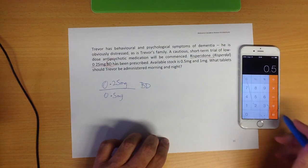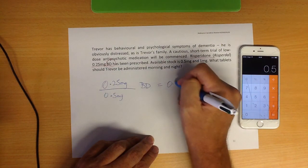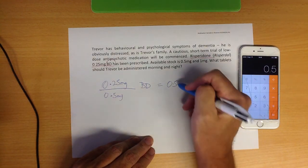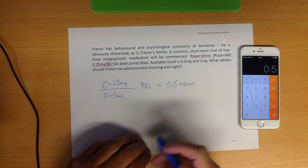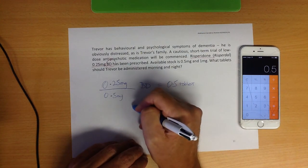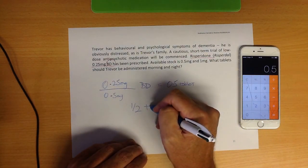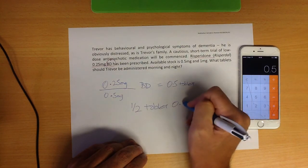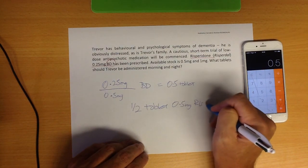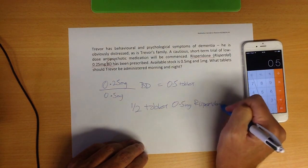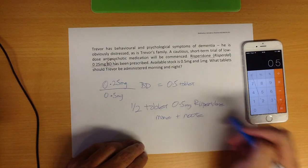And that equals 0.5. So that equals 0.5 of a tablet. So it's half a tablet, that's what we had to work out. And enough people got stumped on that for it to be a bit of a worry. So let's just spell that out. Half a tablet of 0.5 milligram risperidone mane and nocte. And that's it.